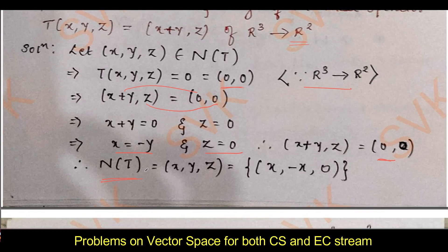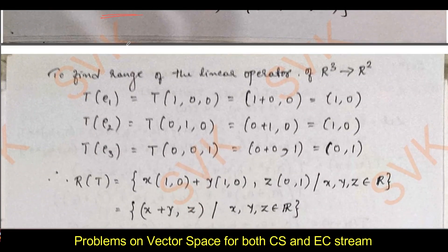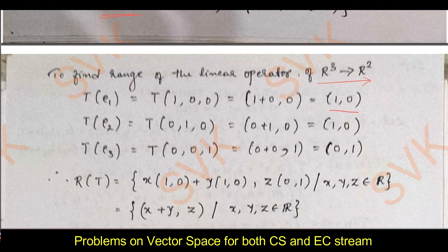Next, moving on to finding the range. To find the range of a linear operator we need to look at the dimension. The transformation goes from R³ to R², so the standard basis of R³ is e₁ = (1,0,0), e₂ = (0,1,0), e₃ = (0,0,1). Substituting into T(x,y,z) = (x+y, z): T(e₁) = (1+0, 0) = (1, 0); T(e₂) = (0+1, 0) = (1, 0); T(e₃) = (0+0, 1) = (0, 1).